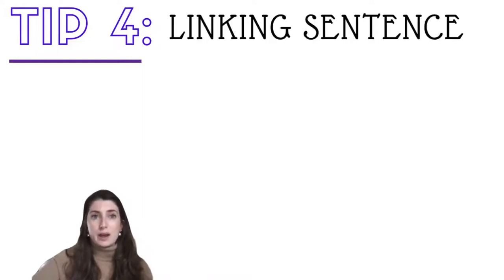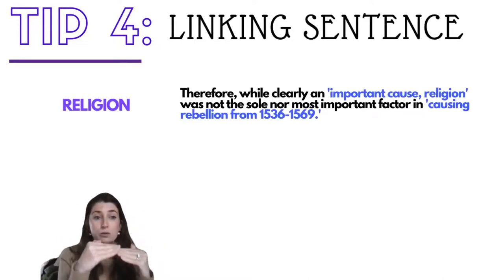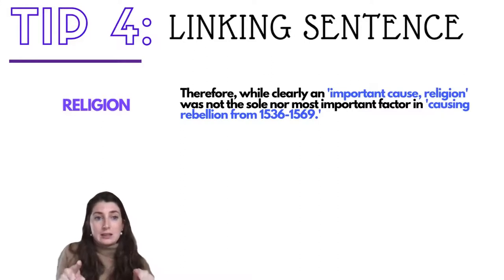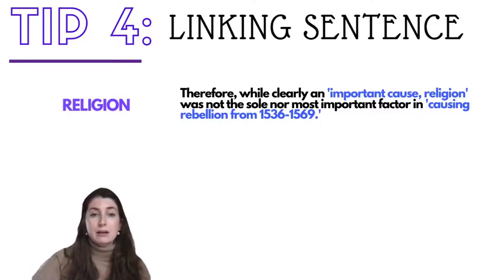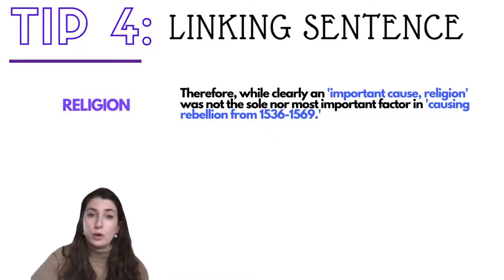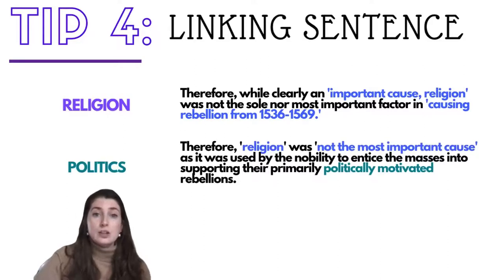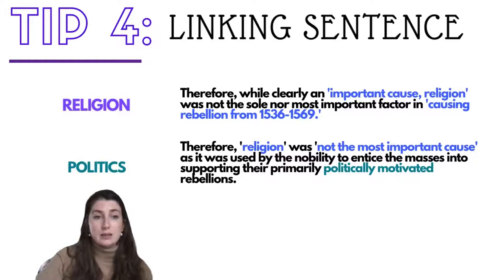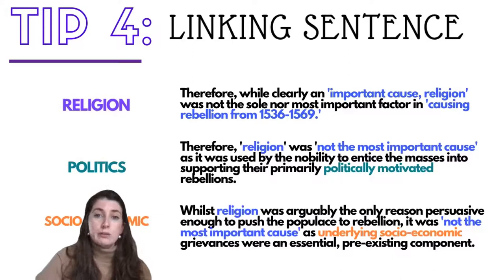Tip four is the other end of the spectrum: the linking sentence. A linking sentence needs to be that final sentence in the paragraph that draws us back to the question. The topic sentence tells us what's to come; the linking sentence shows and proves how everything you've read answers the question. For my religious paragraph: 'Therefore, while clearly an important cause, religion was not the sole nor most important factor in causing rebellion from 1536 to 1569.' For my political paragraph: 'Therefore, religion was not the most important cause as it was used by the nobility to entice the masses into supporting their primarily politically motivated rebellions.' And finally: 'Whilst religion was arguably the only reason persuasive enough to push the populace to rebellion, it was not the most important cause as underlying socioeconomic grievances were an essential pre-existing component.'